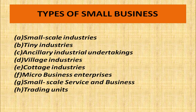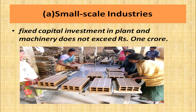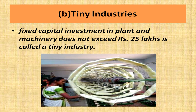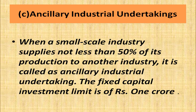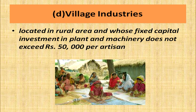Small scale industries are those in which fixed capital investment in plant and machinery does not exceed one crore. Tiny industries are those in which fixed capital investment in plant and machinery does not exceed 25 lakhs. Ancillary industrial undertakings are when a small scale industry supplies not less than 50 percent of its production to another industry — the fixed capital investment limit is one crore.